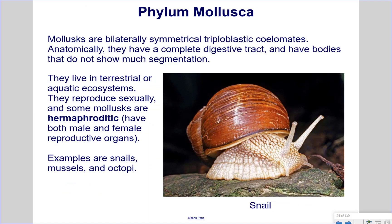Phylum Mollusca. Molluscs are bilaterally symmetrical triploblastic coelomates. Anatomically, they have a complete digestive tract and bodies that do not show much segmentation. They live in terrestrial or aquatic ecosystems. They reproduce sexually, and some molluscs are hermaphroditic, meaning they have both male and female reproductive organs. Examples are snails, mussels, and octopi.